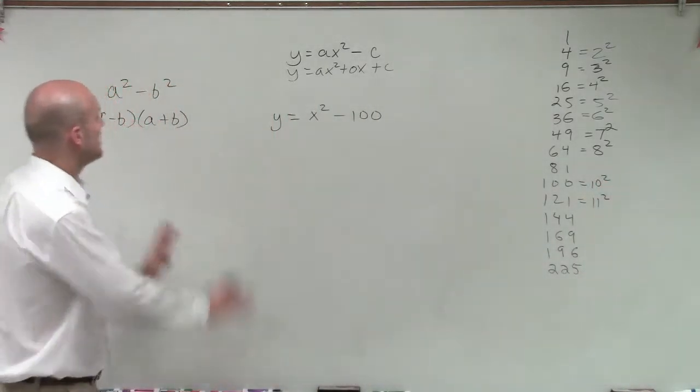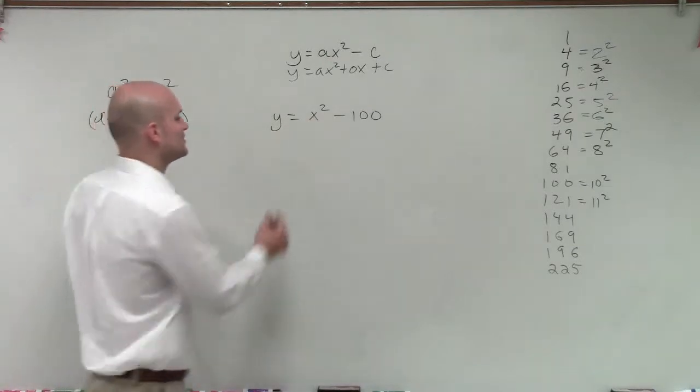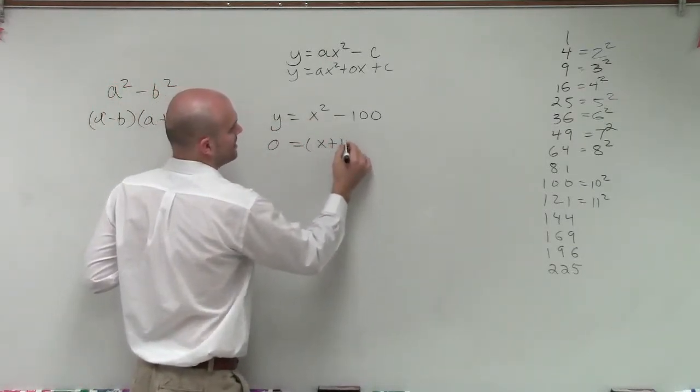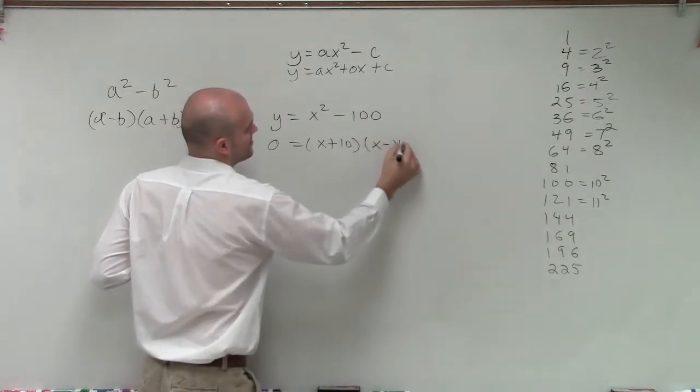So therefore, by applying this factored form, I can factor this. I'm going to set this equal to 0, so we get 0 = (x + 10)(x - 10).